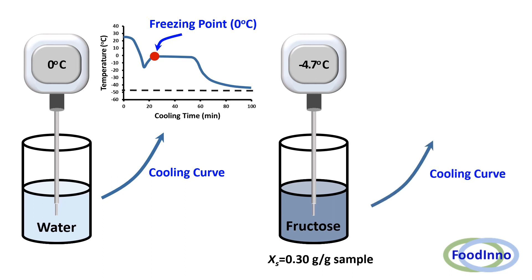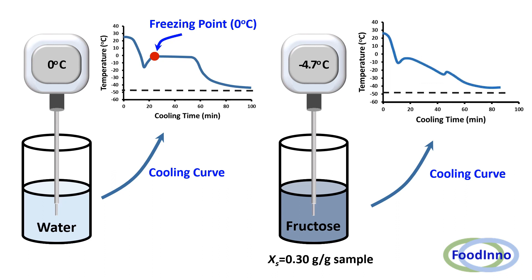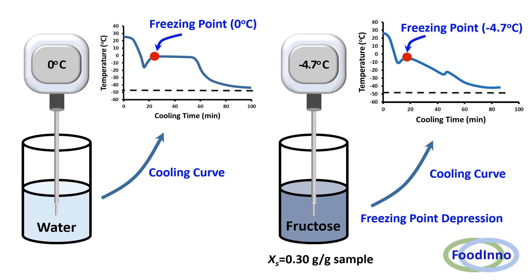The cooling curve shows the freezing point at −4.7°C. The decrease of the freezing point is called freezing point depression. This depression depends on the concentration and type of solutes — for example, their molecular weight and interaction with water.